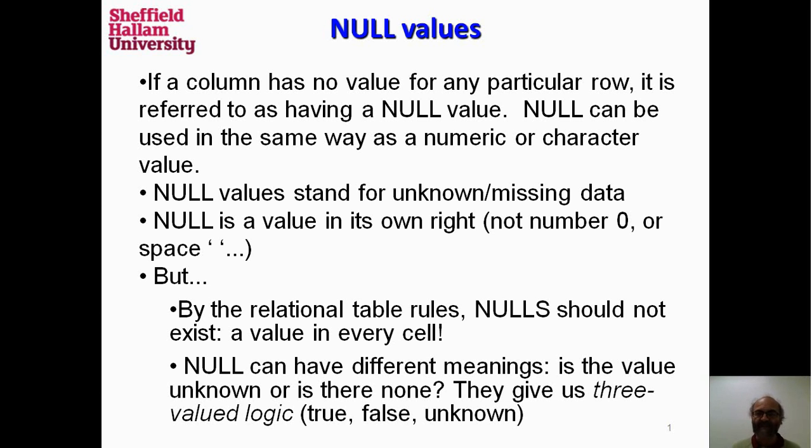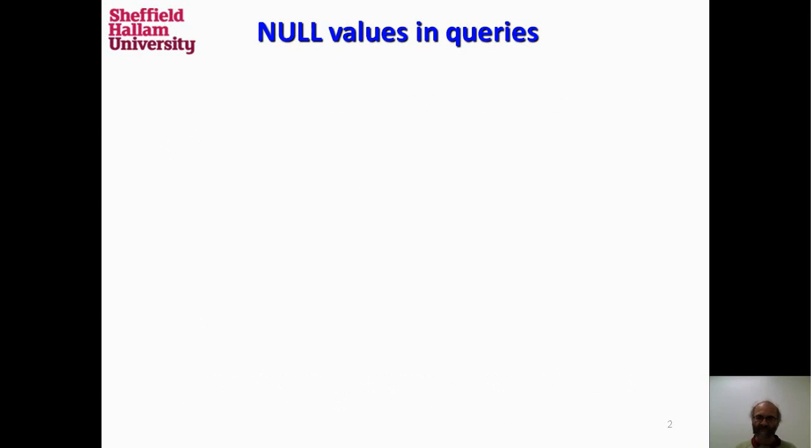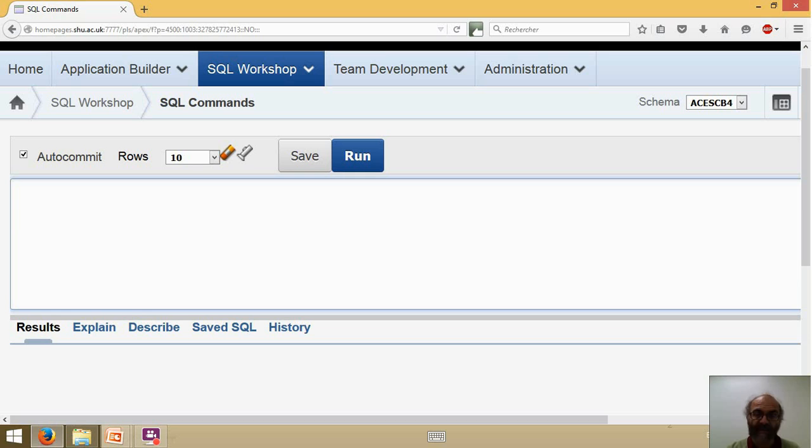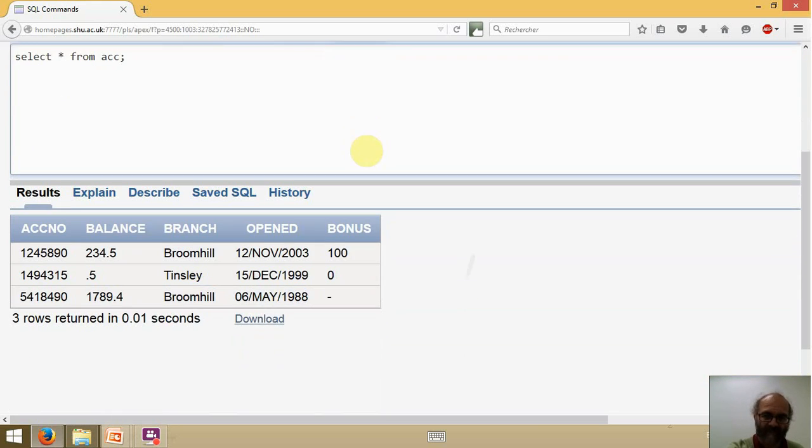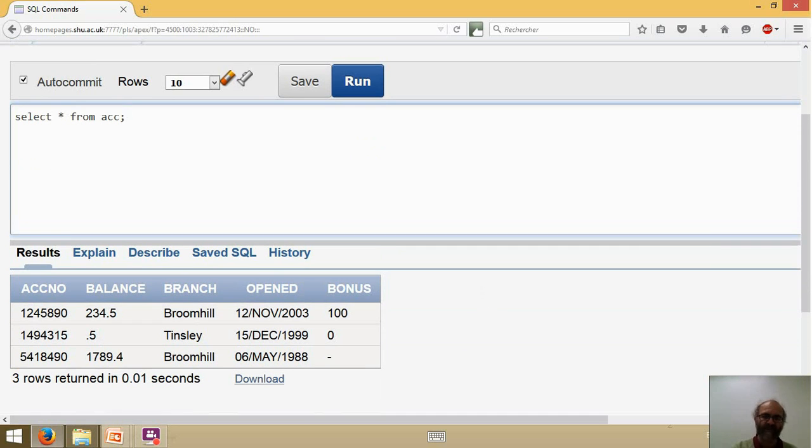What we're getting is three-valued logic. Let's look at it in practice with SQL. I'll start the Oracle interface. Select everything from ACC. And if I scroll, there is a null value. There is no value for the bonus in this particular row.